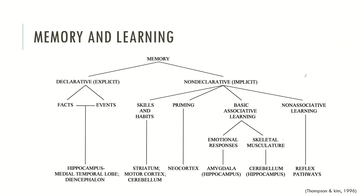Now let's take a more neurobiological model of memory. Memory may be divided into declarative memory or non-declarative memory. Declarative memory is divided into facts and events and tends to be stored in the hippocampus, the medial temporal lobe and the diencephalon. Non-declarative memory, described as implicit memory, encompasses several elements: skills and habits stored in the striatum, motor cortex and cerebellum; priming memory associated with the neocortex; basic associative learning including emotional responses stored in the amygdala — connected with the hippocampus — and skeletal musculature patterns stored in the cerebellum, also connected with the hippocampus. Finally, non-associative learning is associated with the reflex pathways.